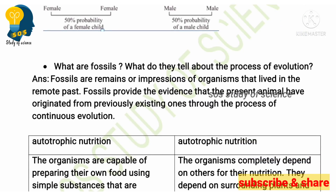Next question: what are fossils and what do they tell us about the process of evolution? Fossils are the remains or impressions of organisms that lived in the remote past. They tell us about the process of evolution.